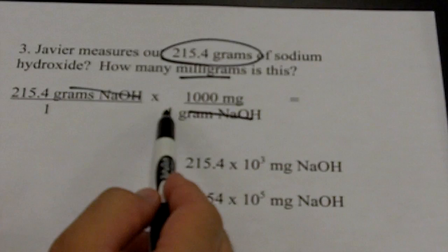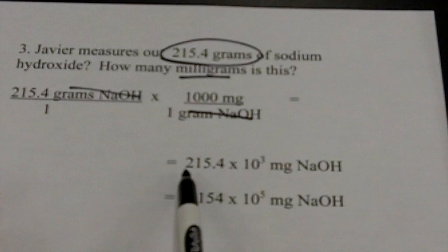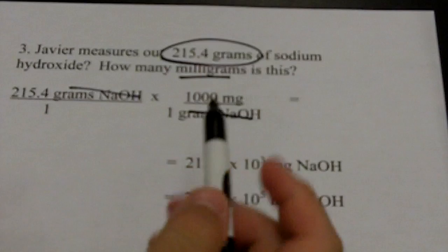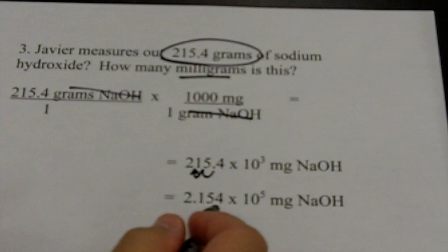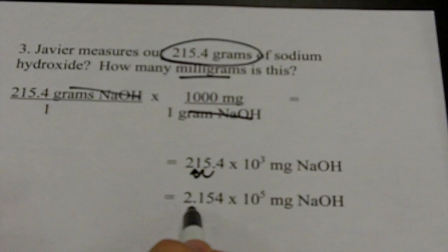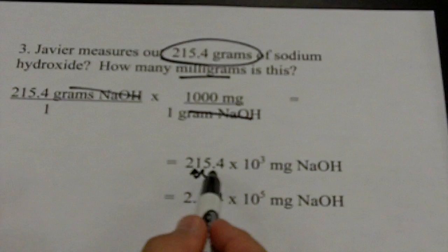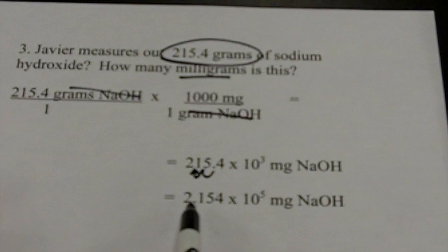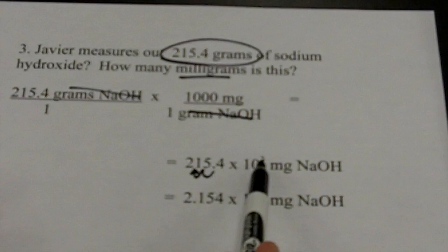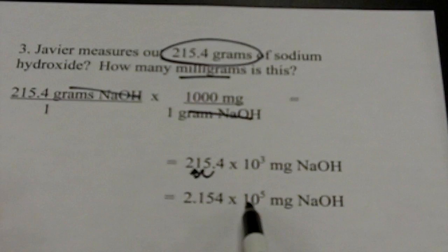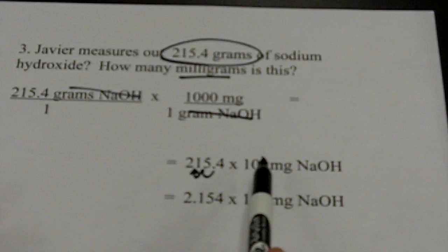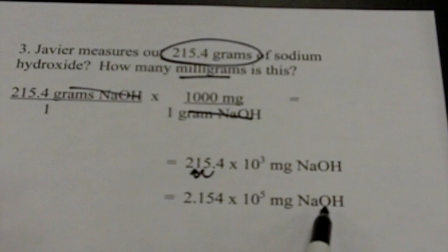I have four significant digits here, so I need four significant digits in my answer. That's not quite scientific notation, so I'll move the decimal place over twice to make it 2.154. I've made this number a hundred times smaller — every time I move the decimal I lower it by a factor of ten; moving it twice means a factor of 100. I compensate by making the exponent larger: 10³ times 100 is 10⁵, since 100 is 10². Adding exponents: 10³ times 10² is 10⁵. My answer is 2.154 times 10⁵ milligrams of sodium hydroxide.